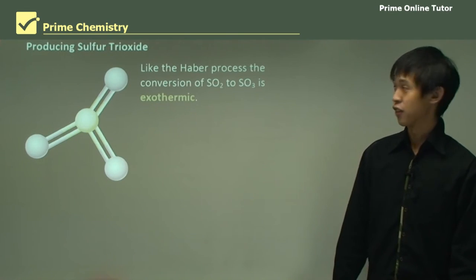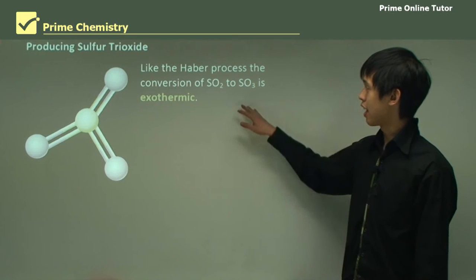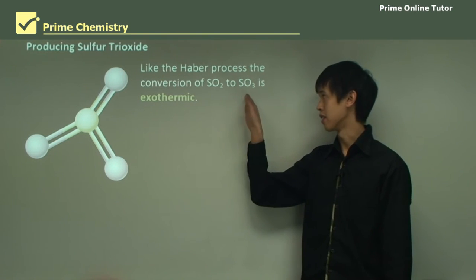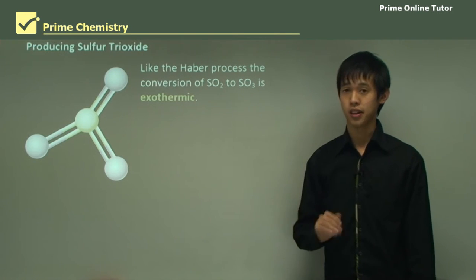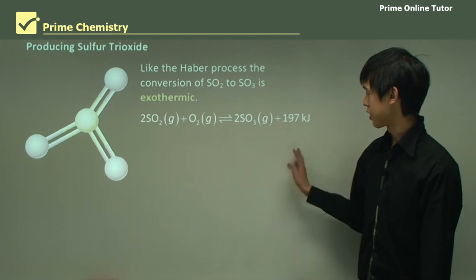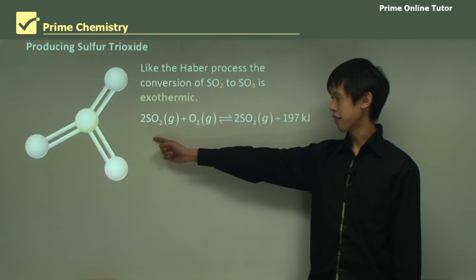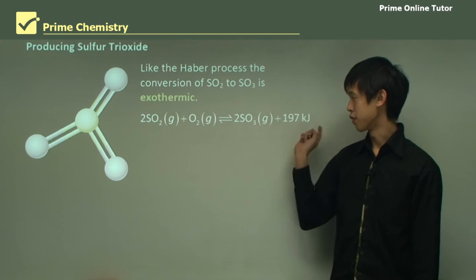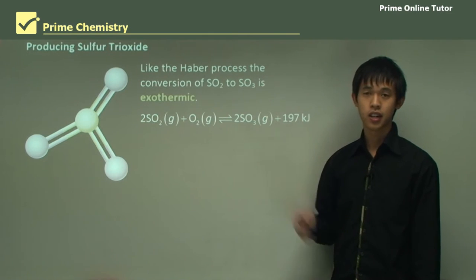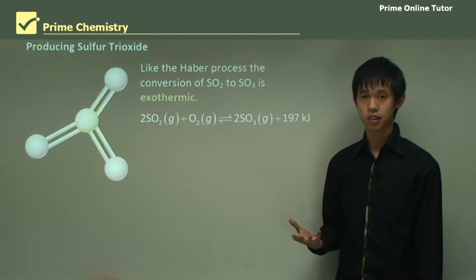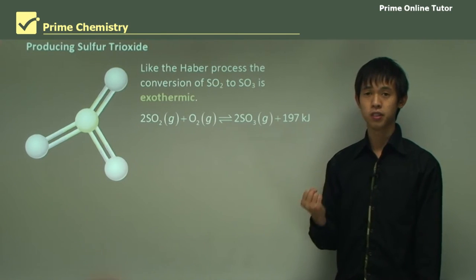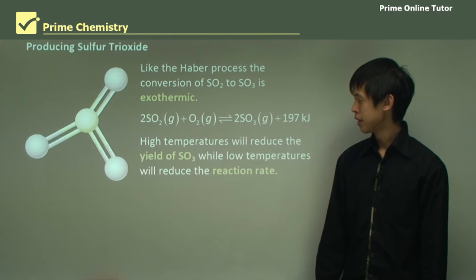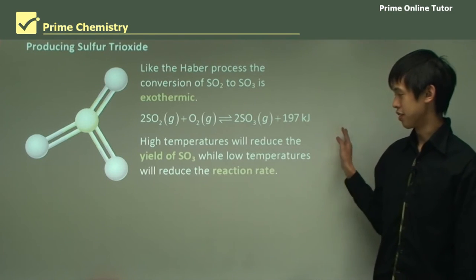Moving to sulfur trioxide — like the Haber process, the conversion from sulfur dioxide to sulfur trioxide is exothermic and at equilibrium. The reaction is: SO2 + O2 → SO3 + 197 kilojoules. It's quite strongly exothermic and releases heat to the system. As a result, high temperatures will actually reduce this yield.